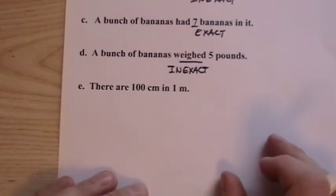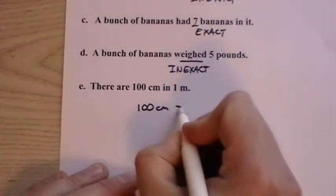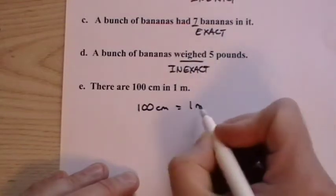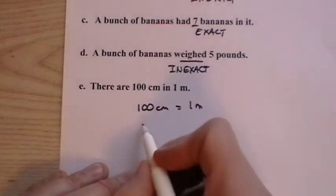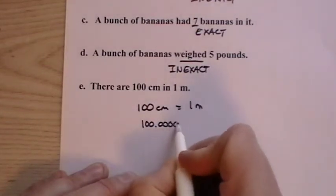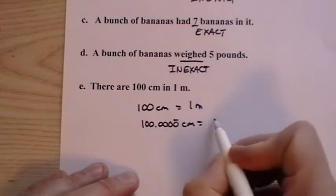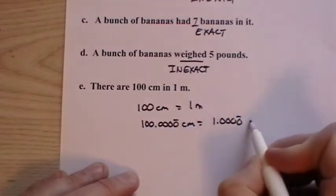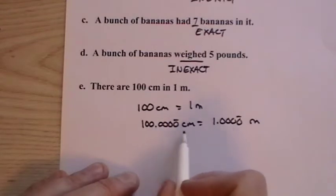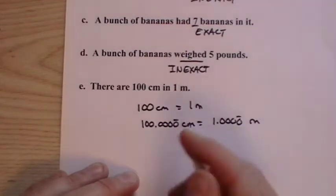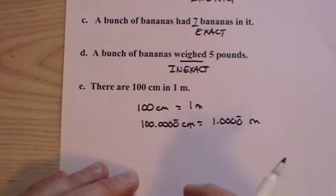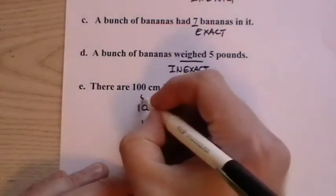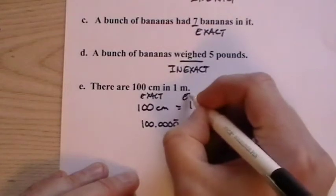There are 100 centimeters in one meter. So 100 centimeters equals one meter. That's a definition or a relationship that you set up between centimeters and meters. That's exact. In reality, we could write it and show that there's no end to the precision here. We know the relationship between centimeters and meters out indefinitely. Here there's an endless number of zeros because it is exact. So both of these numbers in this definition are exact.